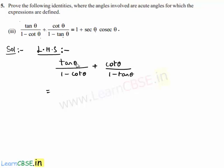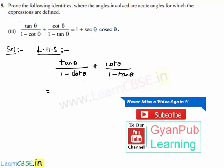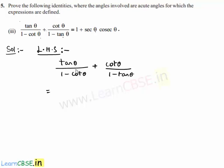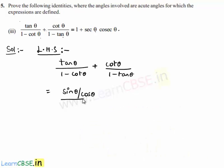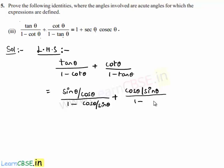So let us write tan and cot in terms of cos and sine so that our calculation could be made easily. We know that tan theta is nothing but sine theta by cos theta, whole divided by 1 minus cot theta, which is nothing but cos theta by sine theta, plus cot theta written as cos theta by sine theta, whole divided by 1 minus tan theta, which is nothing but sine theta by cos theta.